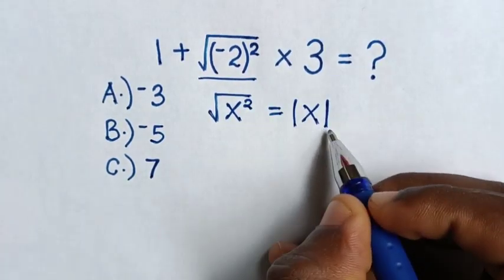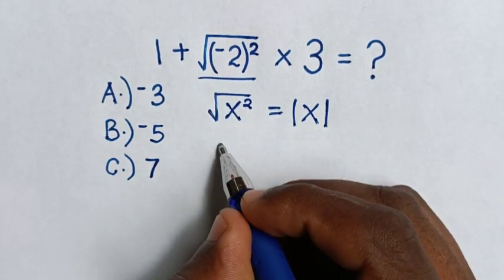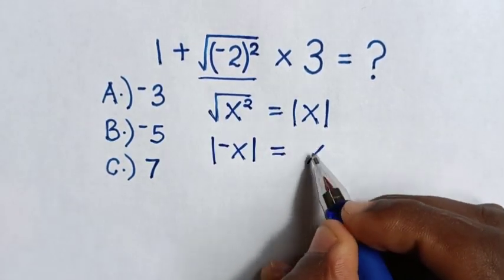The value of x should be positive, but in our problem, it's negative. So, it will be negative x absolute, which will be equal to x.